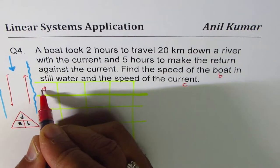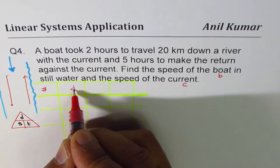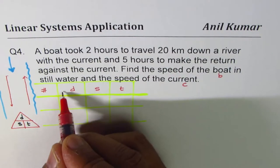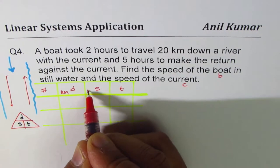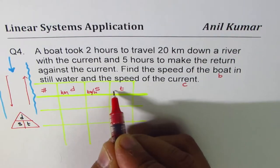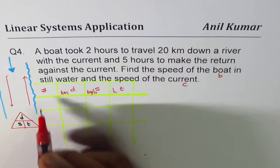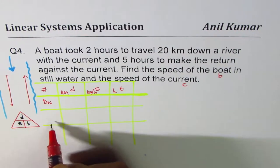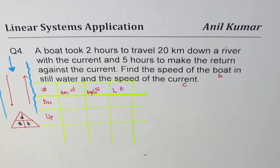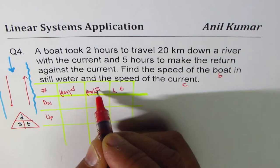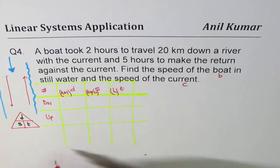So first is the event, whatever is going on, and then we say distance, speed and time. You can write units here, say kilometers, speed is kilometers per hour, time is in hours. The event is you're going down the river, we'll call this as down, and then you're going up. So these are the events.